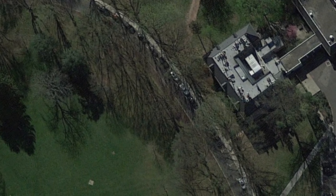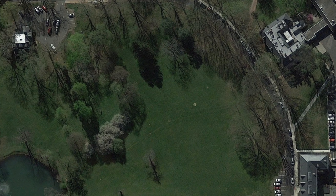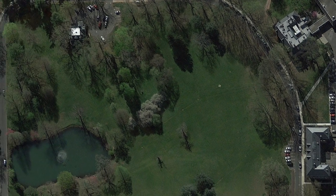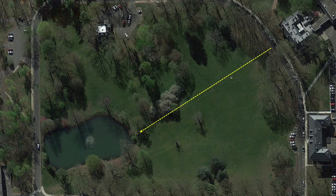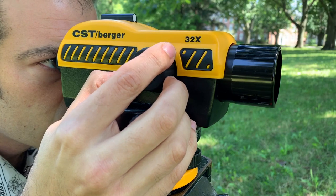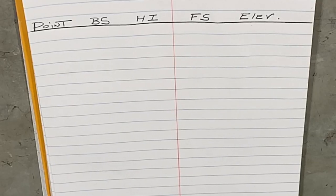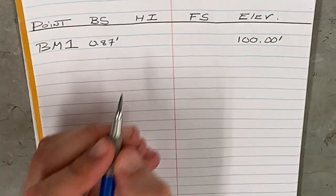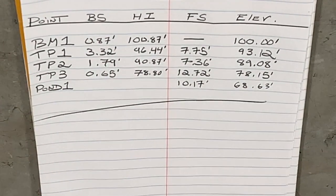Hi everyone, this is Chris. Welcome to your first tutorial. Today we're going to be teaching how to measure elevation, starting at Bartlett Hall and going down to Passion Puddle. To do this, we'll be showing you how to use a sight level, how to focus in on measurements, and then take those measurements and put them into leveling notes. There's some basic math — don't worry, we'll be taking it slow. In the end, you'll be able to see how elevation changes over distance.